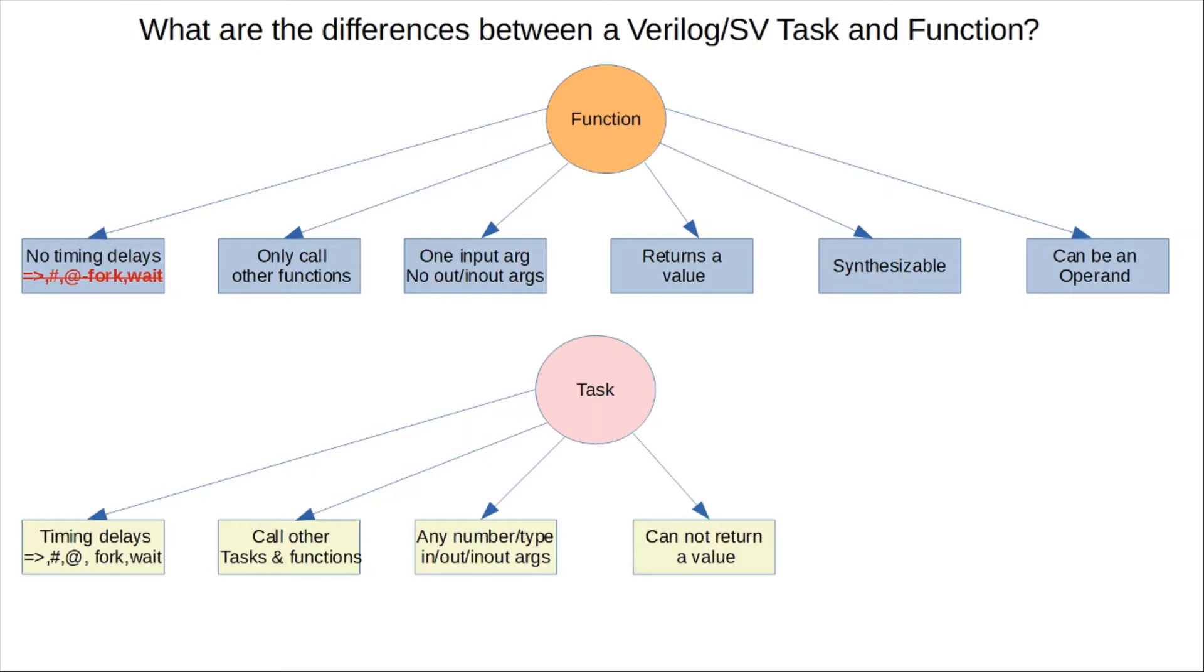A task does not return an output like a function. But you could achieve a similar functionality, or a similar kind of functionality can be achieved in a task with an output argument, essentially.